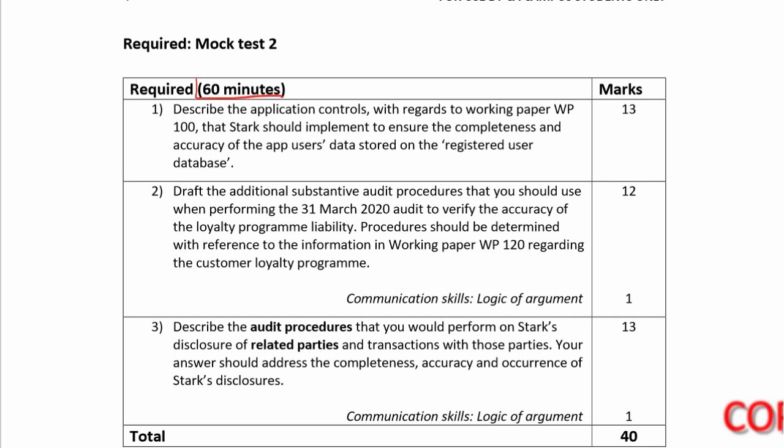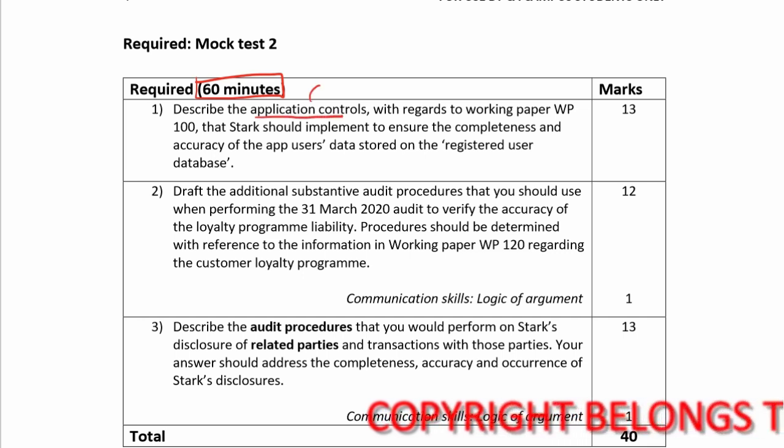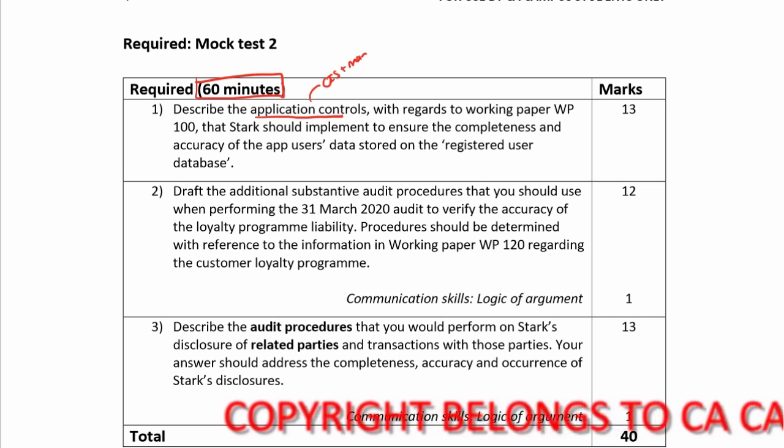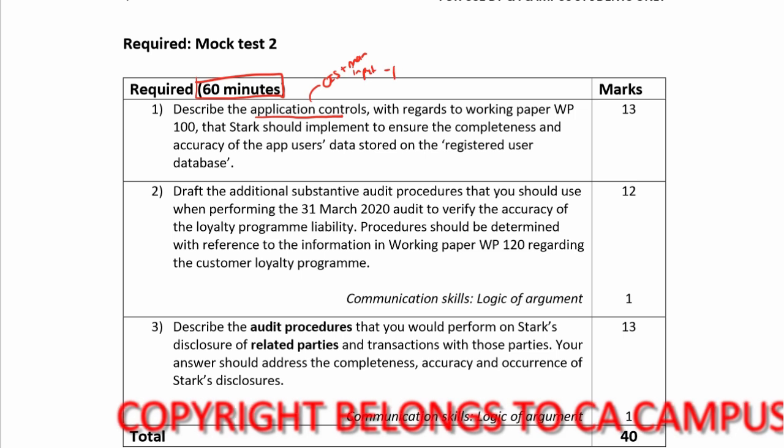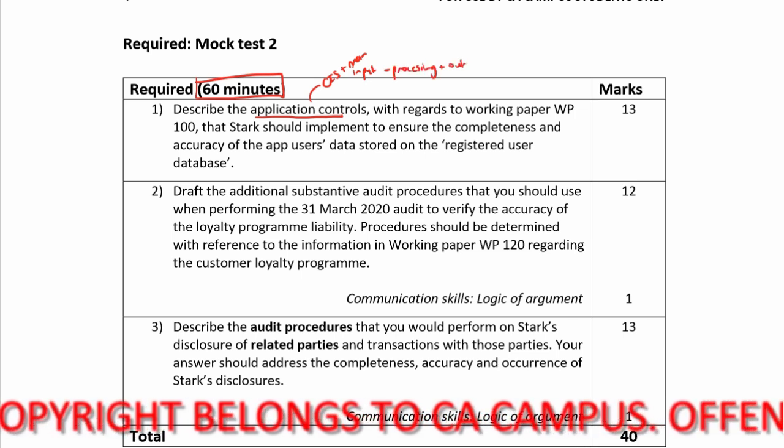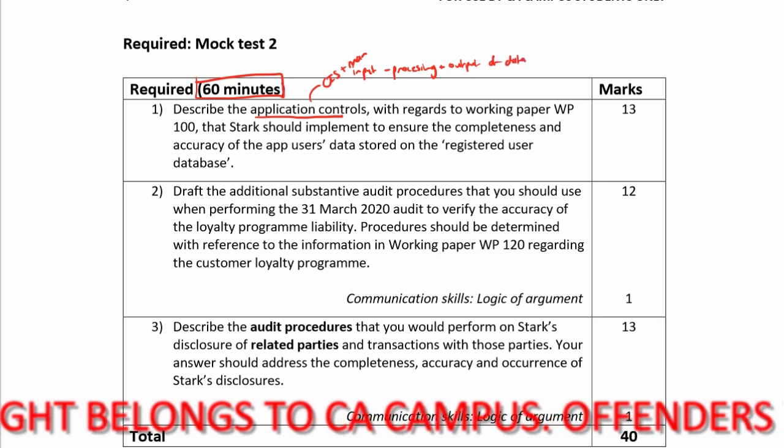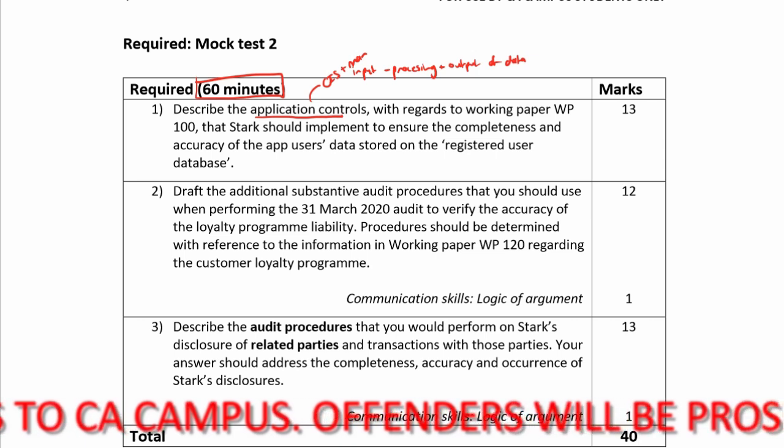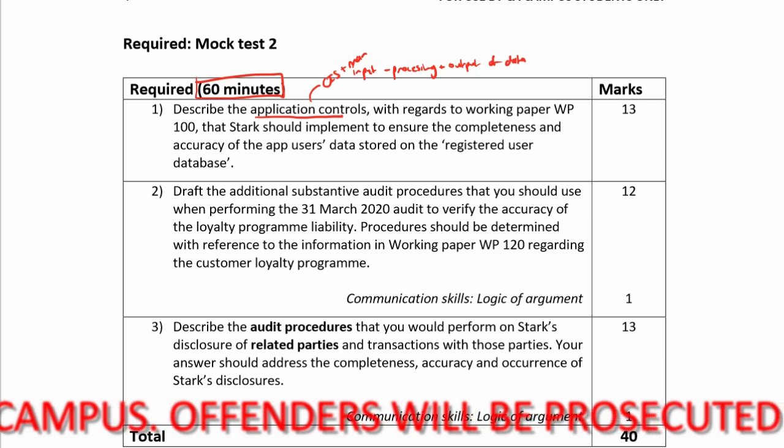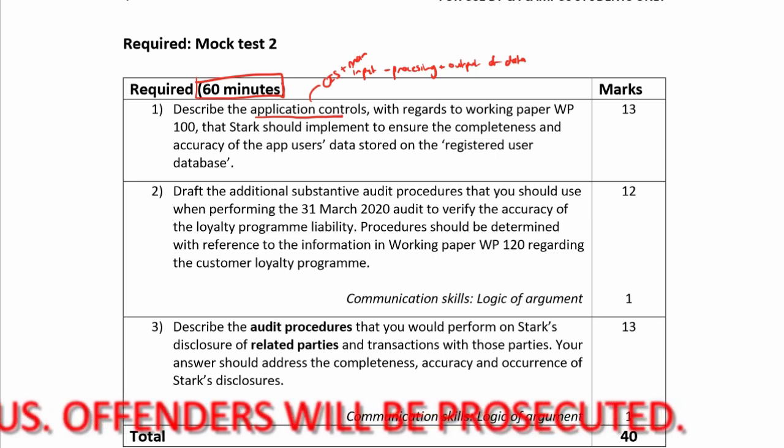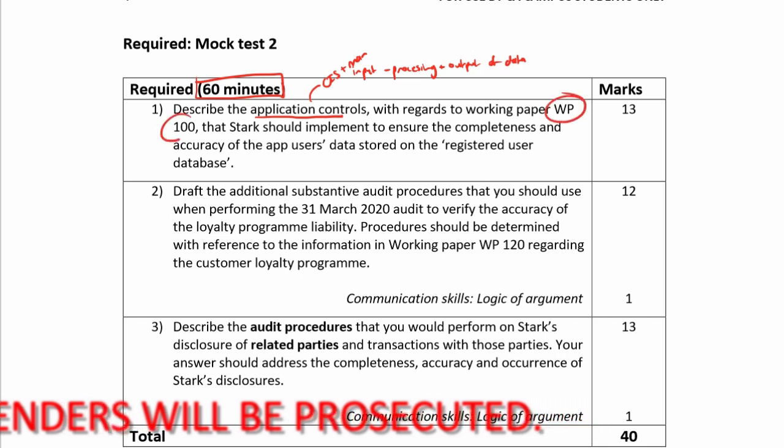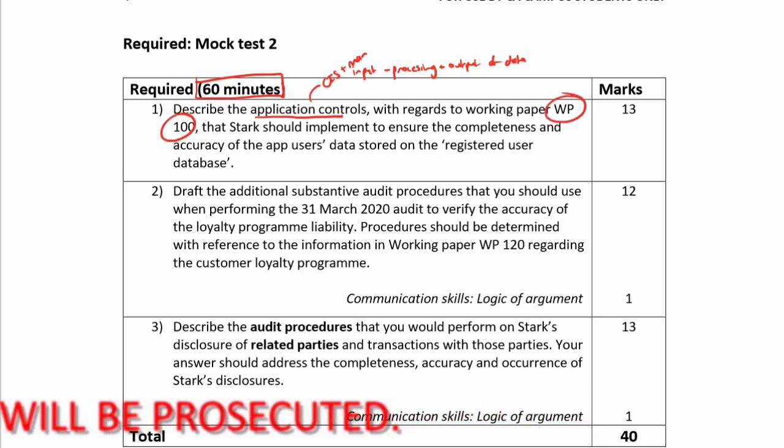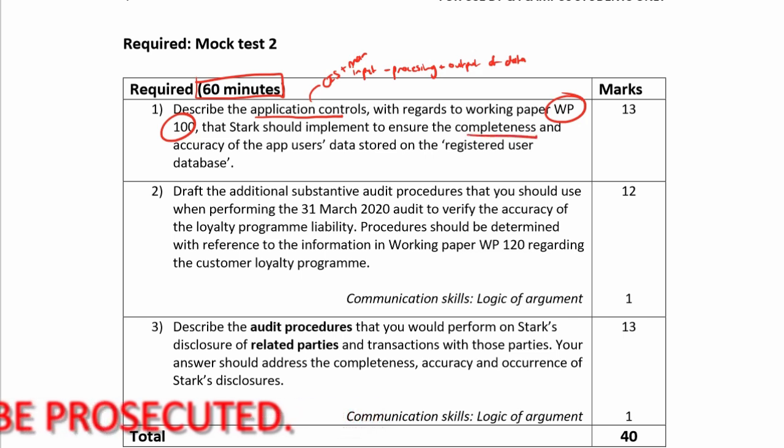I've got 60 minutes. Question one: describe the application controls. Application controls tell me I need to be looking at my computer information system and manual controls that help with the input, processing, and output of data into the computer information system. With regards to working paper W100, that Stock should implement to ensure the completeness and accuracy of the app users' data stored on the registered user database. So I'm only looking at this working paper, and I'm only looking at which application controls are going to help with the completeness and accuracy.